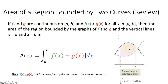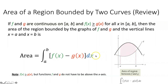So if you want to find the area between two curves on a given closed interval from a to b, all you have to do is take the integral from a to b of your upper function, which in this case would be f(x), minus your lower function, which in this case would be g(x). This definite integral will get you the exact area between these two curves on this given interval.